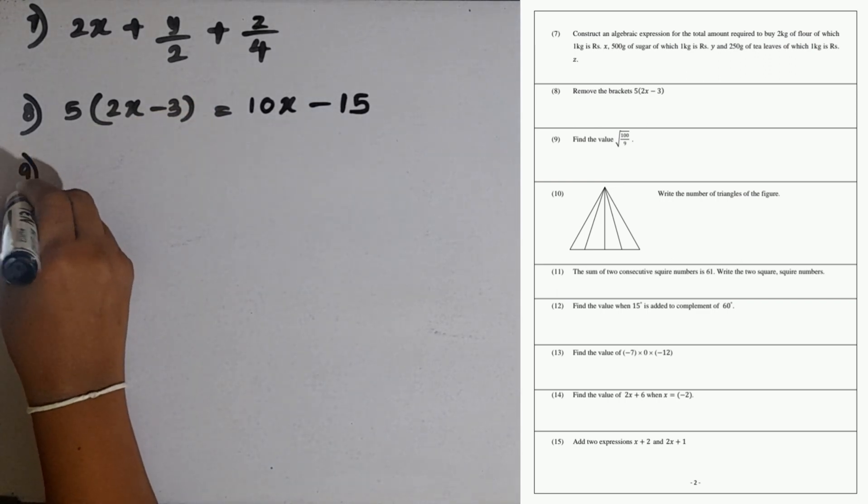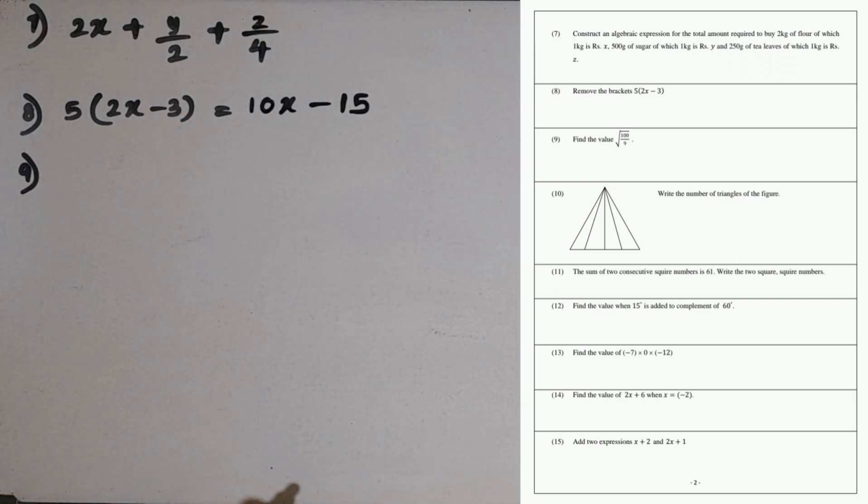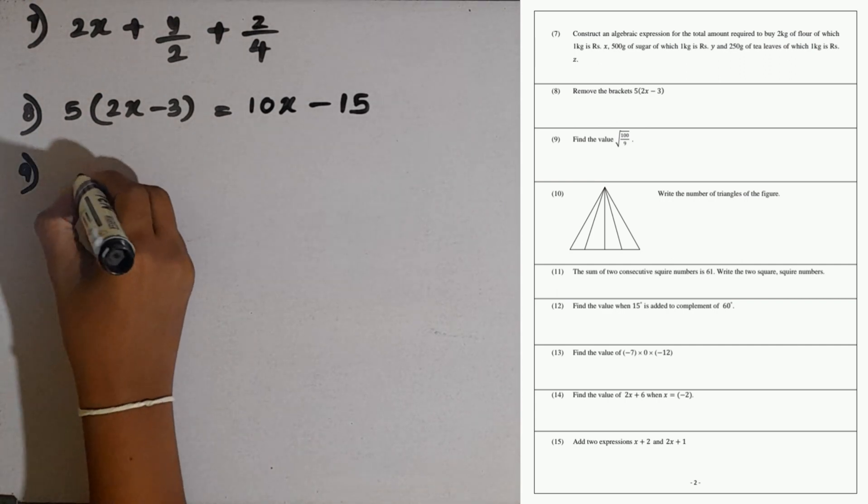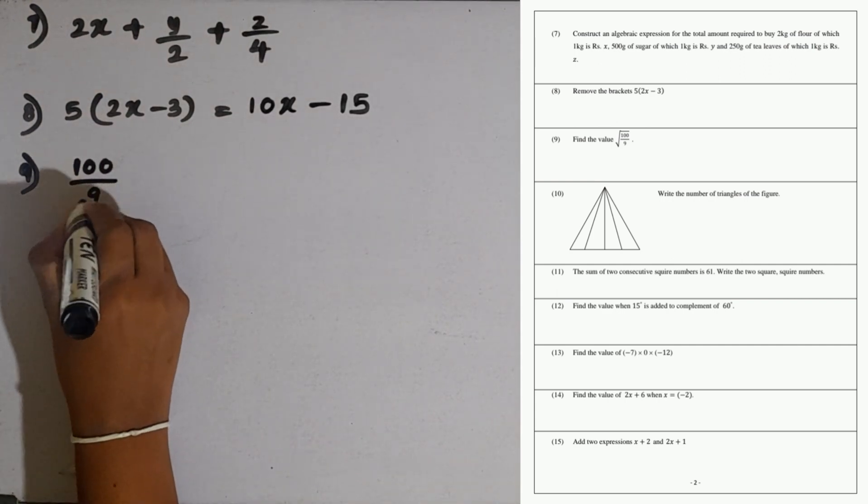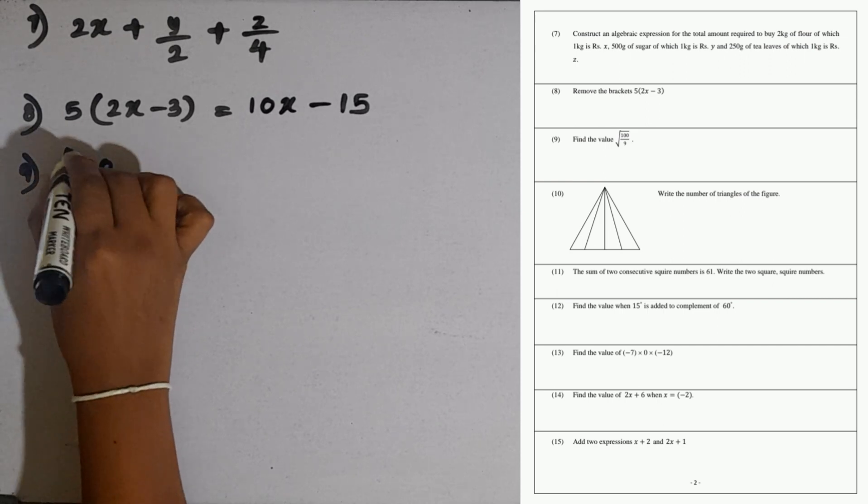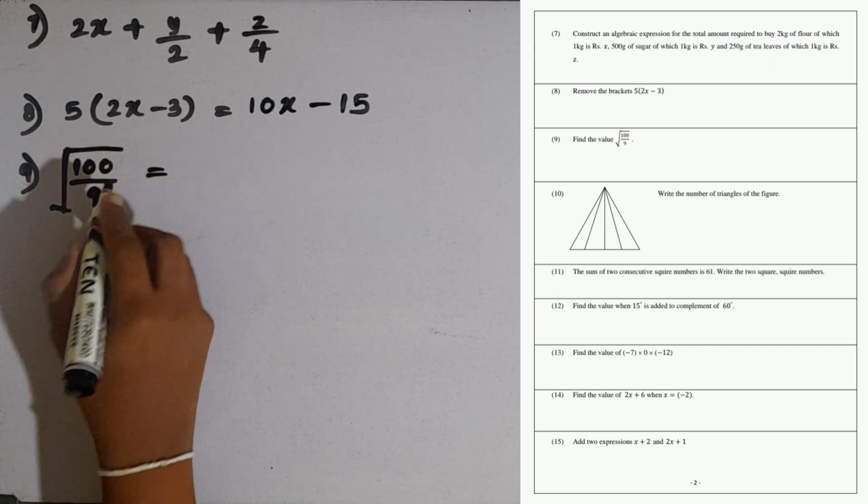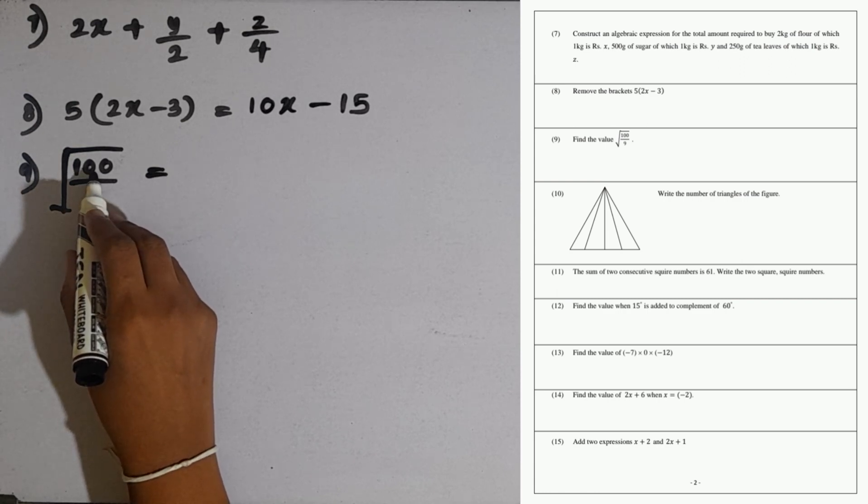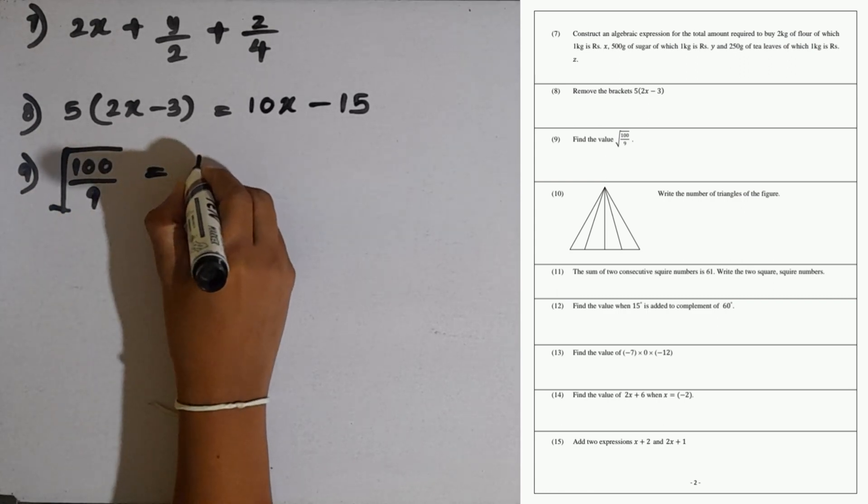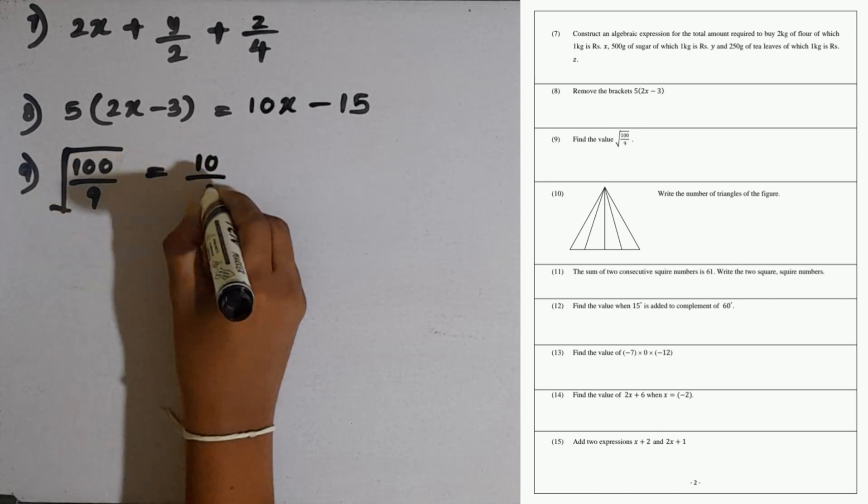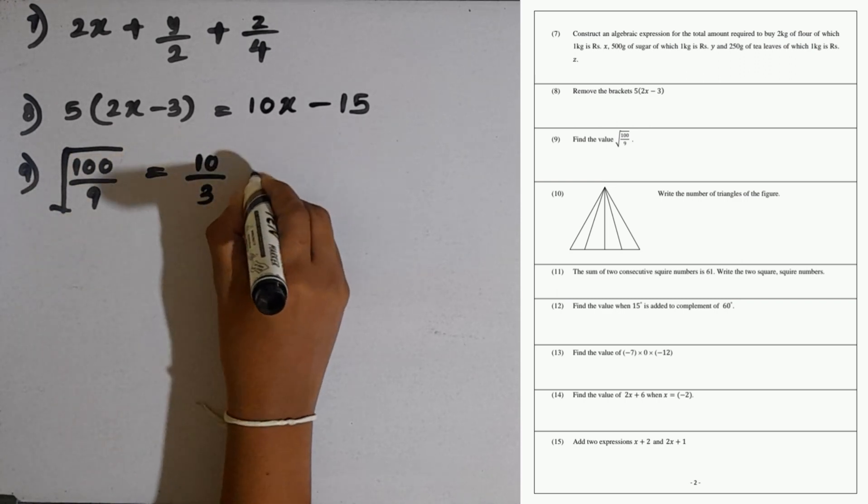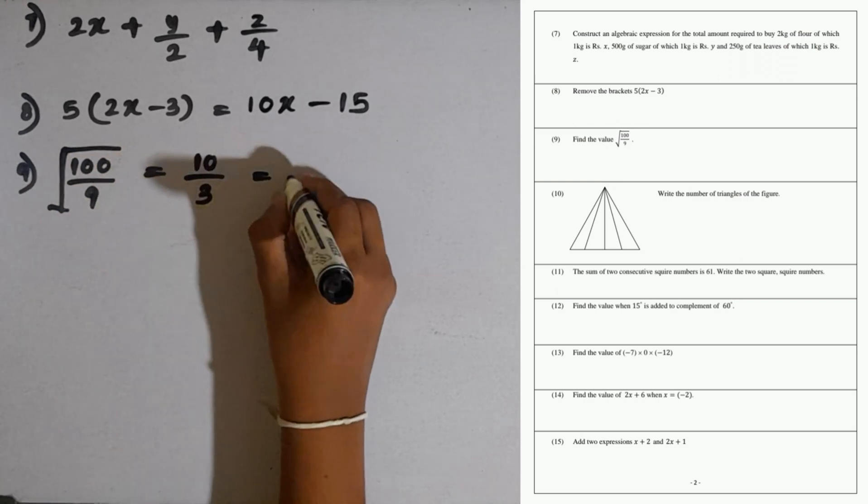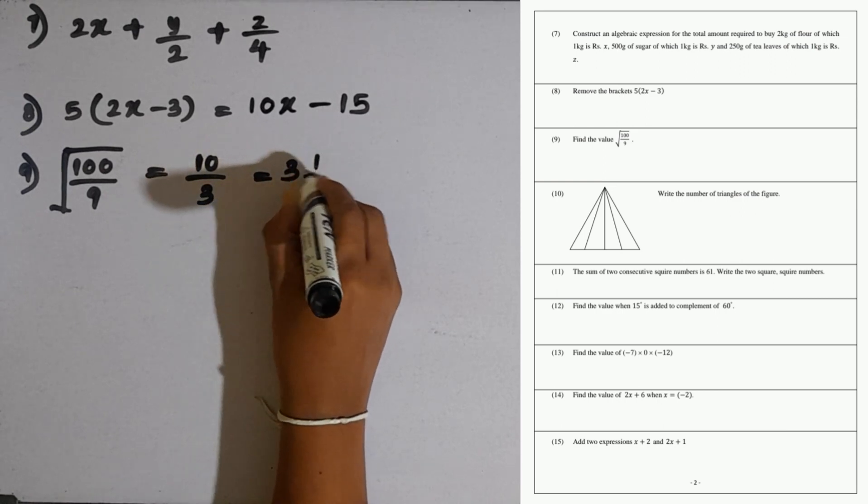Question number 9: find the value of square root of 100 over 9. This is a fraction. We can take the square root separately. Square root of 100 is 10, then square root of 9 is 3. We can write it as a mixed number, 3 and 1 over 3.